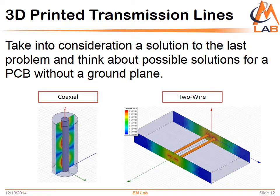One solution to consider is to use different types of transmission lines that have their own ground plane incorporated — just as with a two-wire transmission line we studied earlier. We can use the concept where one wire is charged with sending the signal and the other wire serves as the ground plane. This could work because the electromagnetic fields will be contained in that area, as you can see in the simulation. On the other hand, we can use a coaxial cable — coaxial cables are known to contain electromagnetic fields within their core and their dielectric, but then we run into big problems of how to manufacture these things.